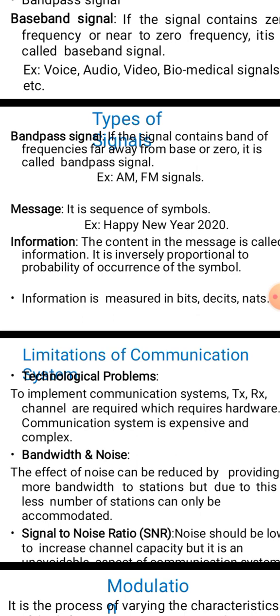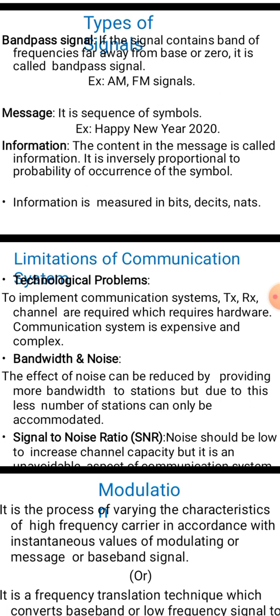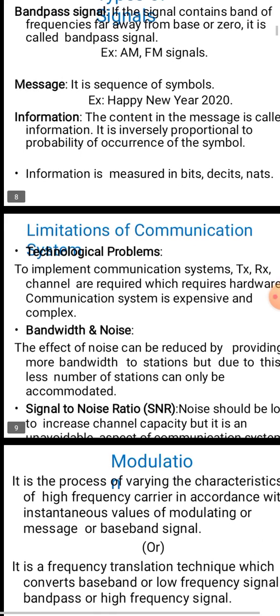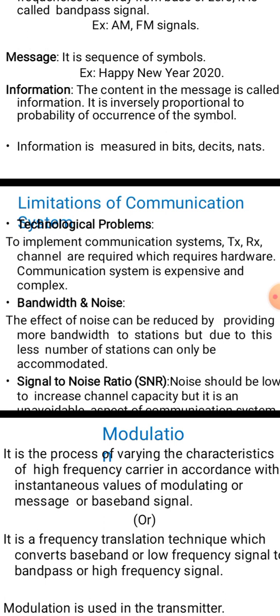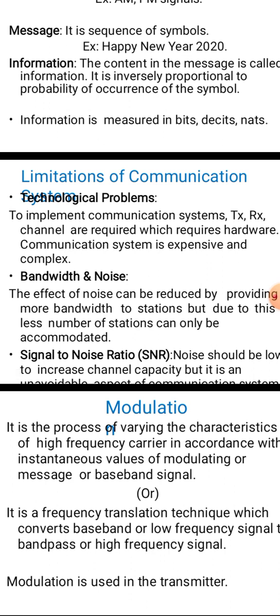Waveguides are used at frequencies ranging from one gigahertz to several hundreds of gigahertz and support large bandwidths on the order of a few gigahertz. There are two structures: rectangular and circular waveguides. The standard rectangular copper waveguide dimensions are 25.4 mm × 12.7 mm, with a typical attenuation of 0.11 dB per meter at 10 GHz. Waveguides are highly immune to interference and induced additive noise.